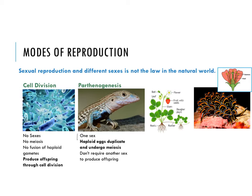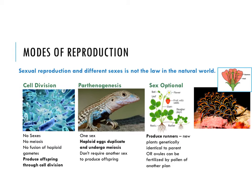One of the most well-studied versions of parthenogenesis is in the whiptail lizards found in the US. There are also species that have found ways to make sex optional — they do it when it's to their advantage, but they don't have to. Plants are a good example: a lot of plants will produce runners, which are new plants genetically identical to the parent — those runners are clones, asexual reproduction. But they can also reproduce through fertilization with another plant.